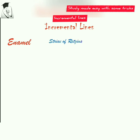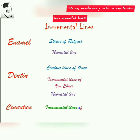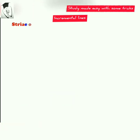We'll cover the incremental lines of enamel, which are called the Stria of Retzius, and the neonatal lines. In the case of dentine, the incremental lines of Von Ebner, the contour lines of Owen, and the neonatal line. In the case of cementum, the incremental lines of Salter.